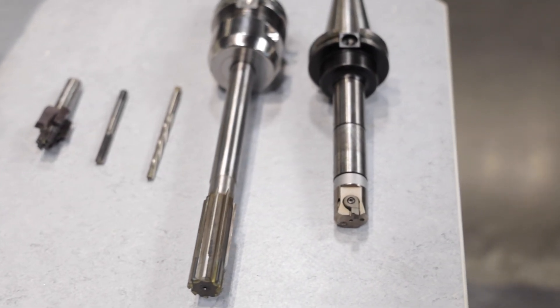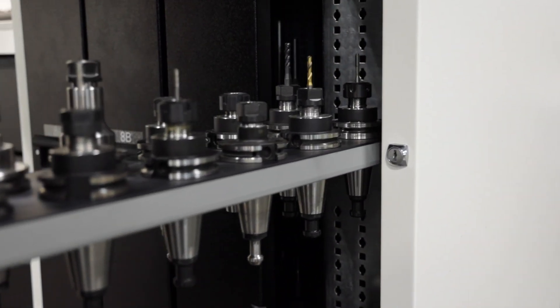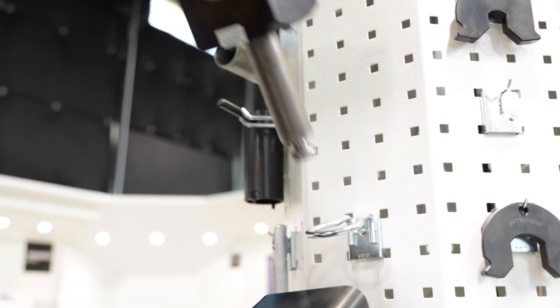So today let's talk about boring and reaming and when you might want to use one method over the other. I want to talk about tight tolerance hole making specifically in milling, not turning, from a mile high view.